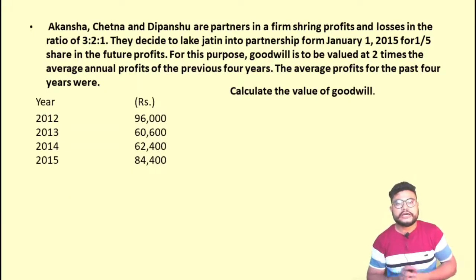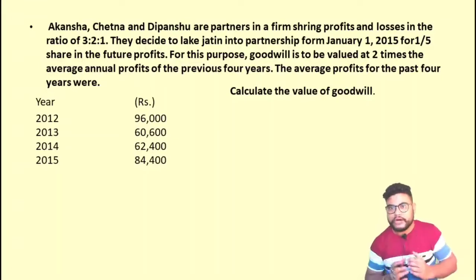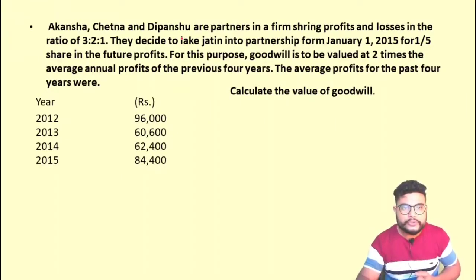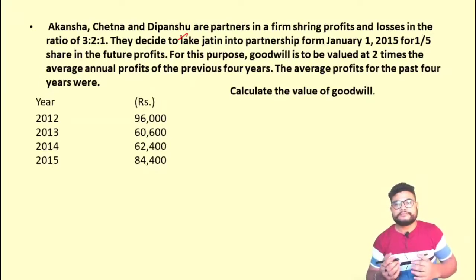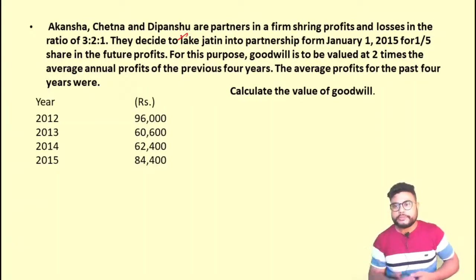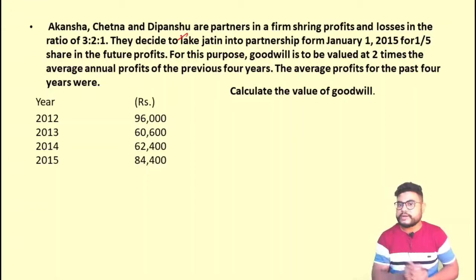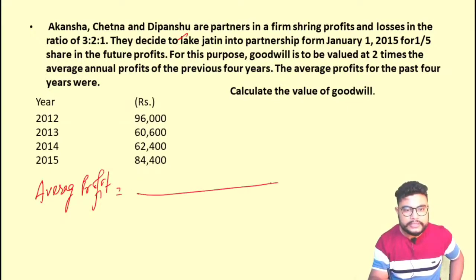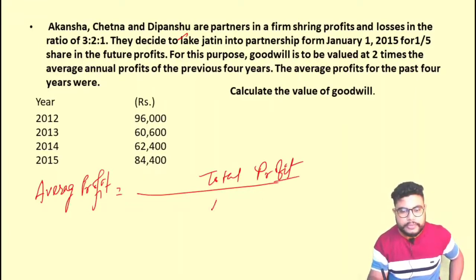Let us solve a question. Akan Shah, Chetna, and Deepanju are partners sharing profits and losses in the ratio 3:2:1. They decided to admit Jatin into partnership from 1st January 2015 for one-fifth share in future profits. For this purpose, goodwill is to be valued at two times the annual average profits of the previous four years — so it is two years purchase.